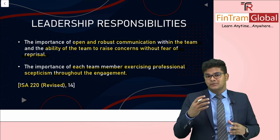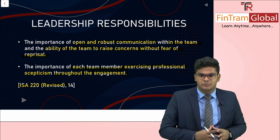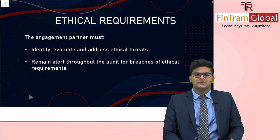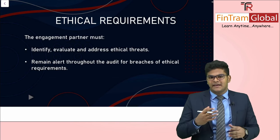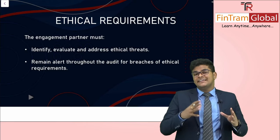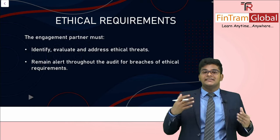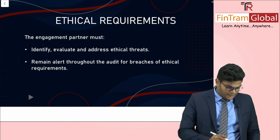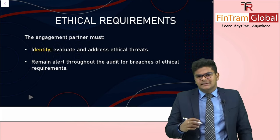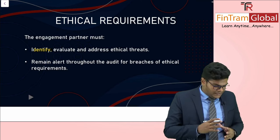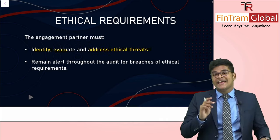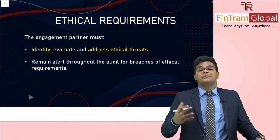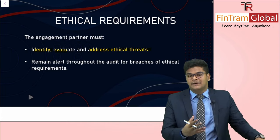This is all taken from the revised ISA 220, so we think of these things from an individual perspective — what should the engagement partner do? Moving on to ethical requirements, also from ISA 220: every individual in the audit firm must comply with ACCA's code of conduct and ethical standards issued by bodies such as IESBA. The engagement partner must identify, evaluate, and address ethical threats such as self-interest, self-review, advocacy, intimidation, or familiarity threats.